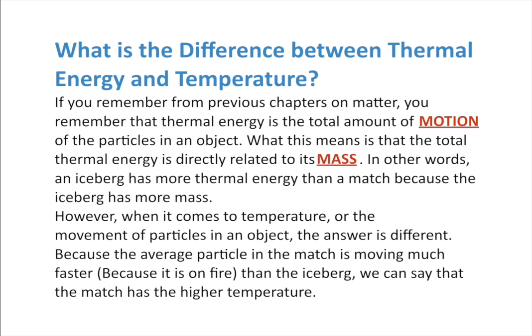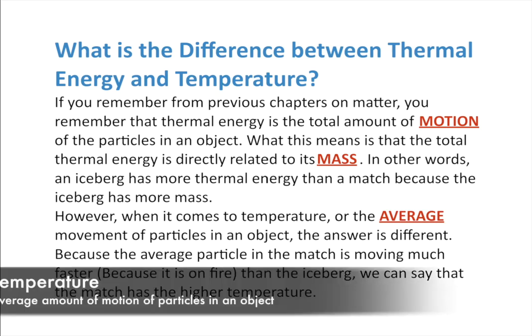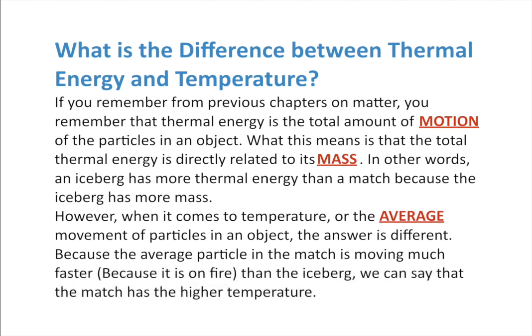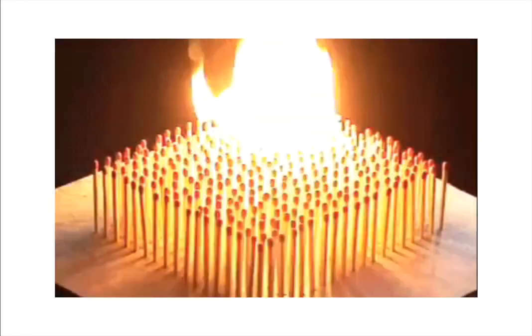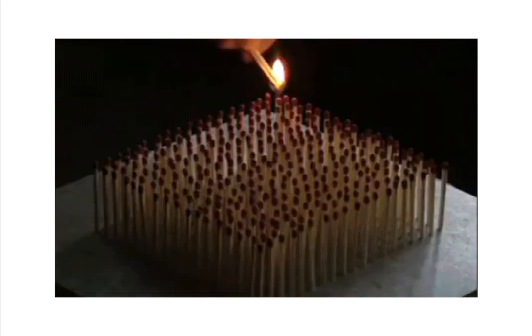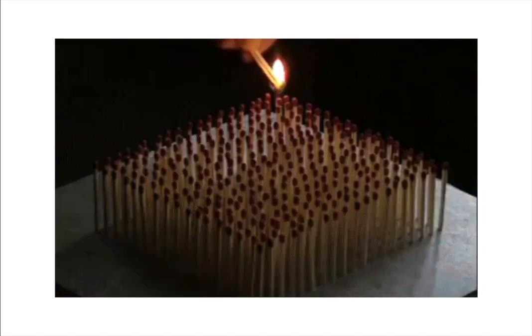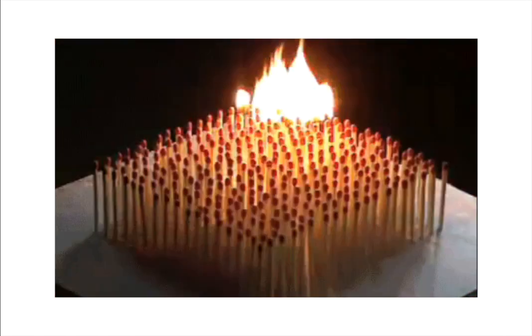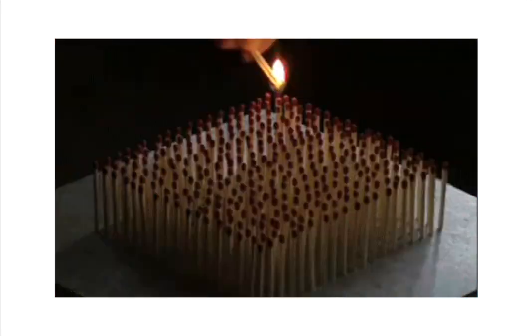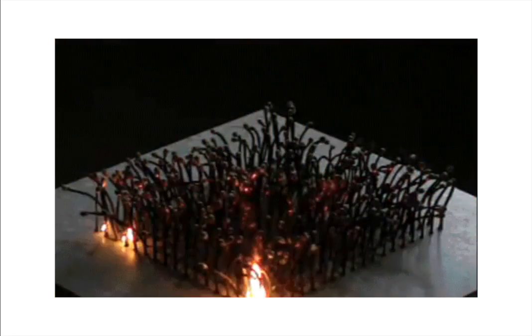What we normally think of as heat is really about temperature, which is the average motion of all the particles. The iceberg has a lot of thermal energy because of its mass, but the individual particles aren't moving much. The burning match has little total thermal energy, but its particles are moving so fast that its average is much higher — giving it a higher temperature. In science, we use Celsius or Kelvin as our temperature scale, not Fahrenheit.